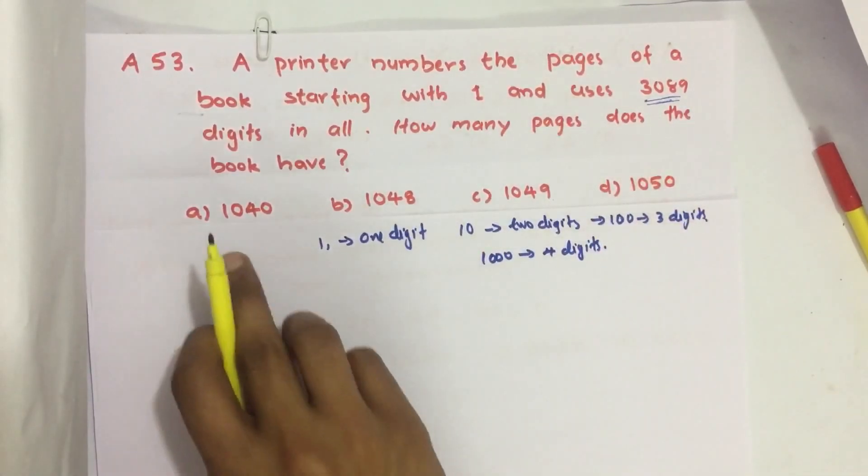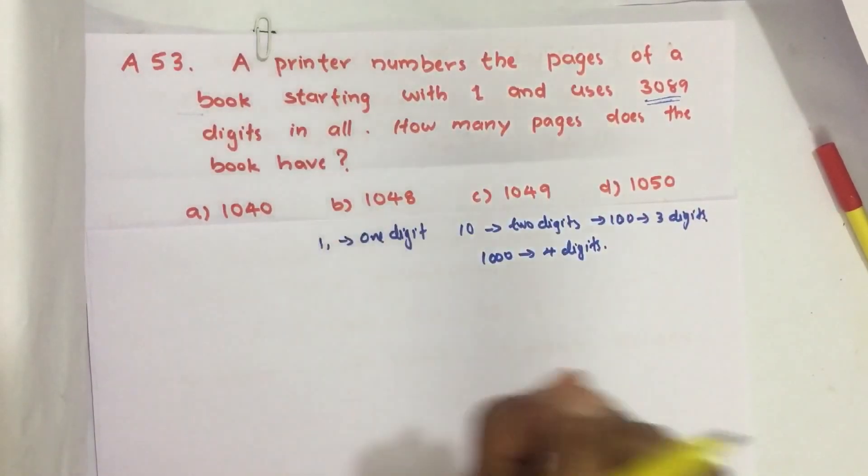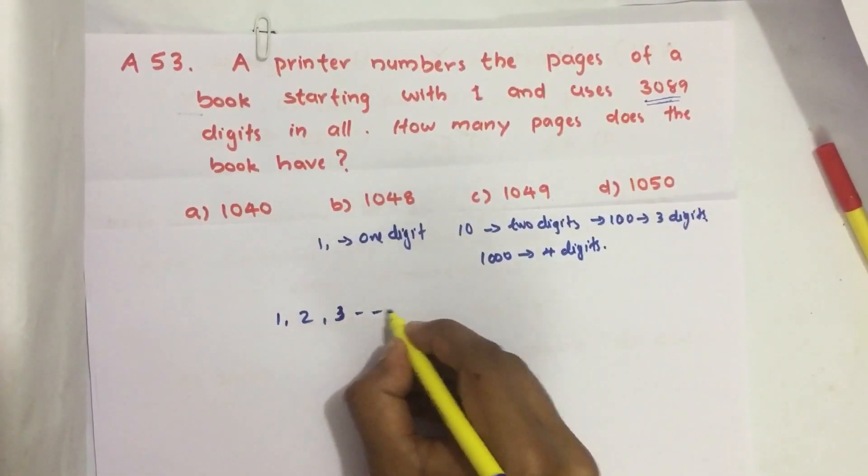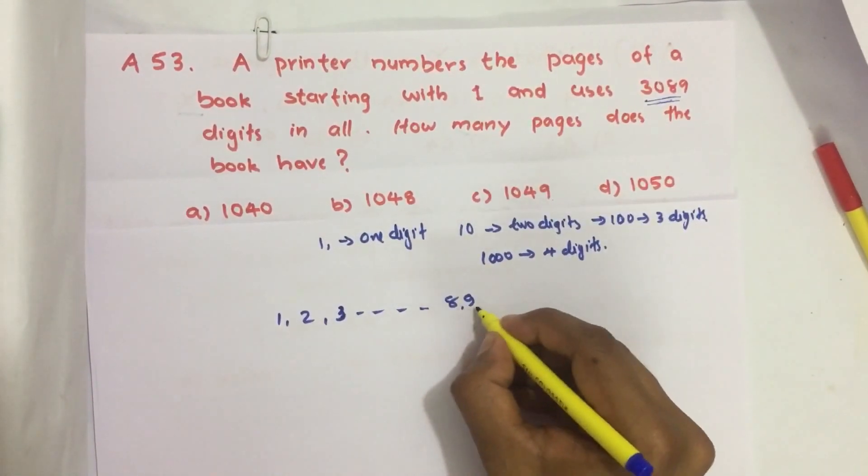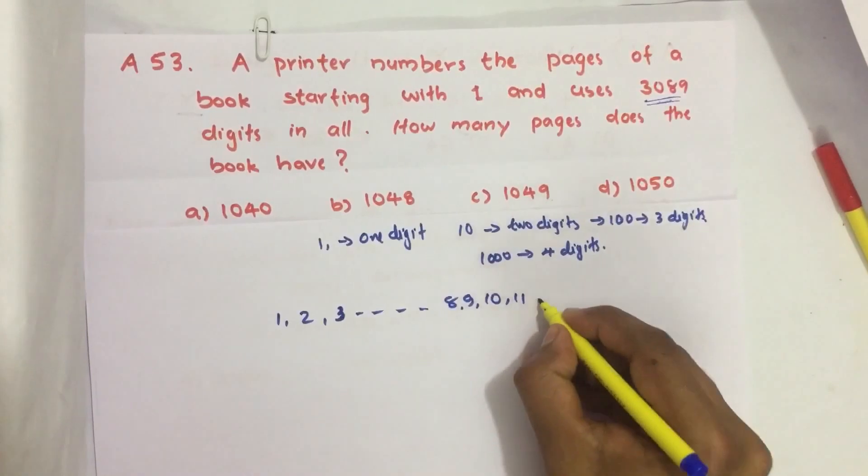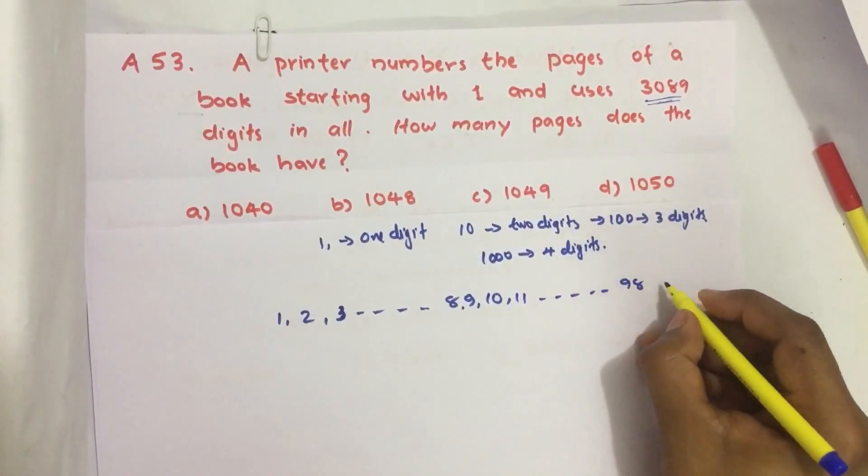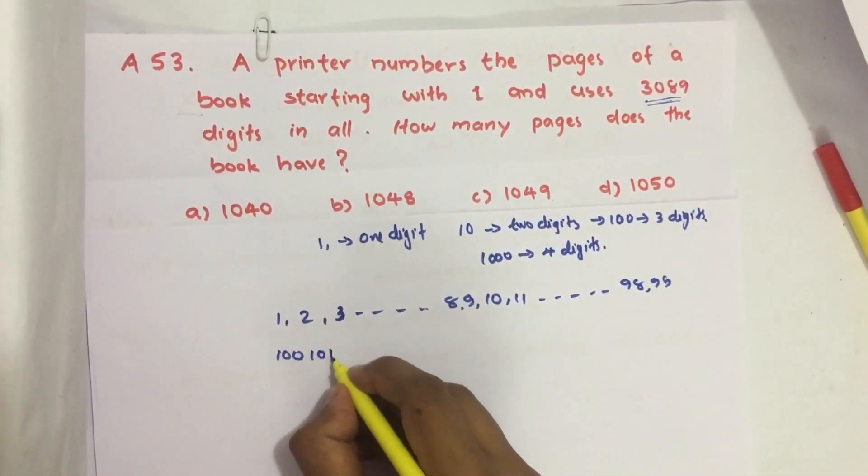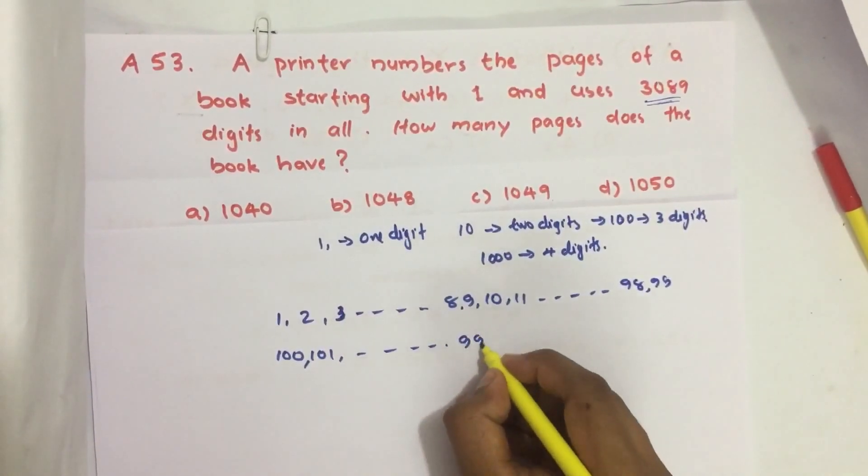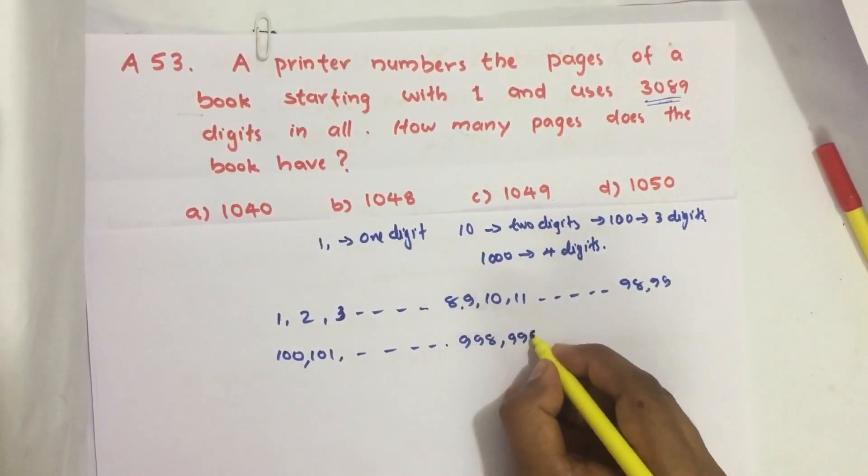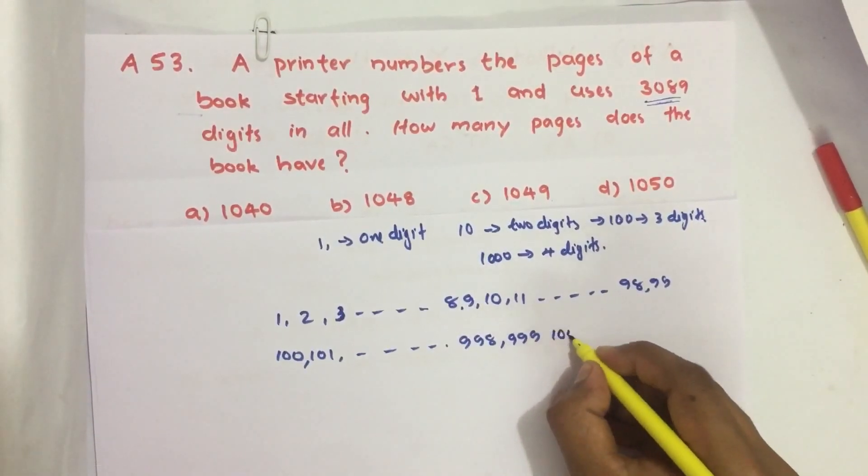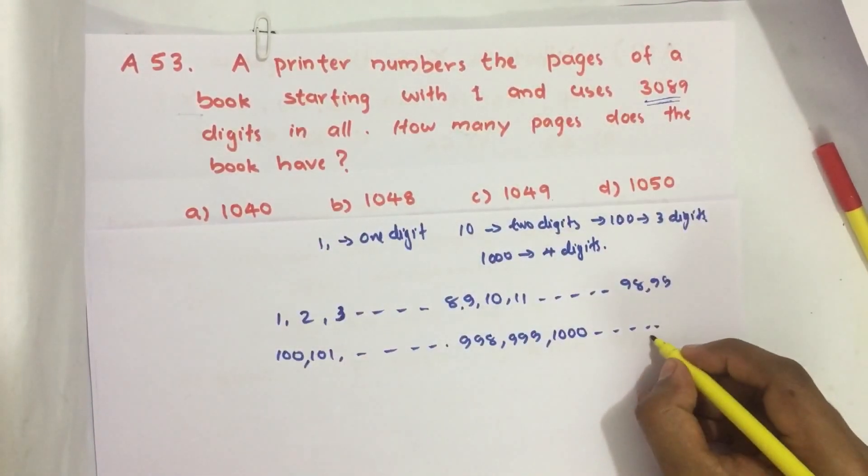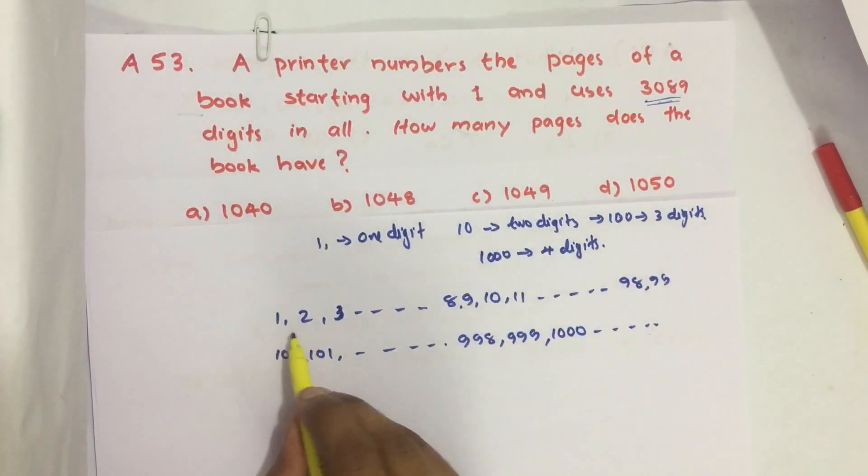We have to find how many digits are used. If you're writing 1, 2, 3, 8, 9, 10, 11, then 98, 99, 100, 101, up to 998, 999, 1000, the answer is around 1040 to 1050. So we have to count all these.